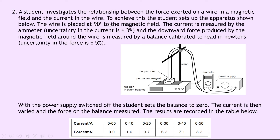Question 2: the wire is placed at 90 degrees to the magnetic field. The current is measured by the ammeter, where the uncertainty in the current is plus or minus 3%, and the downward force produced by the magnetic field around the wire is measured by a balance calibrated to read in newtons, where the uncertainty in the force is plus or minus 5%. With the power supply switched off, the student sets the balance to zero. The current is then varied and the force on the balance measured. The results are recorded in a table with current in amps and force in millinewtons — 6 sets of readings.